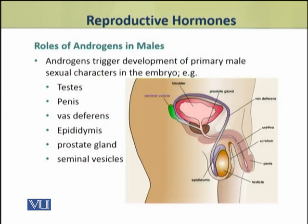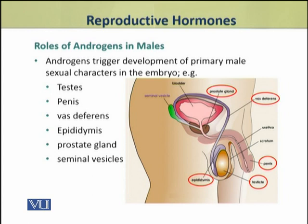Now we shall discuss the roles of androgens in males. Androgens trigger the development of primary male sexual characters in the embryo. For example: testes, penis, vas deferens, epididymis, prostate gland, and seminal vesicles. All these characters are called the primary male sexual characters, and they are formed because of the action of androgens in the embryo.